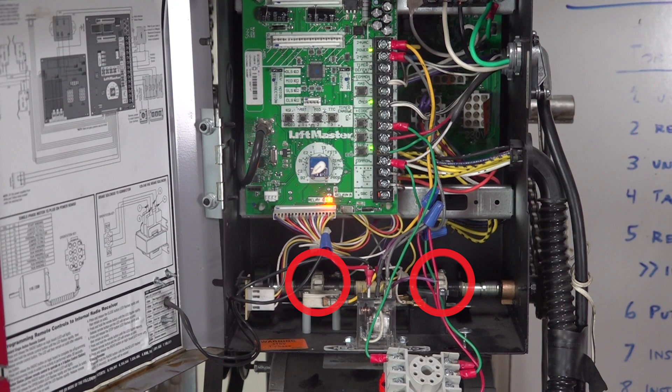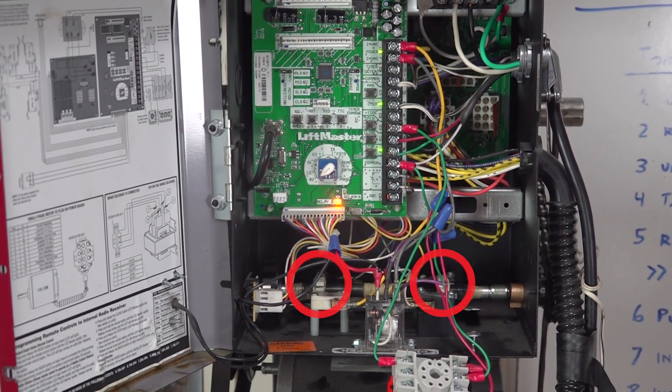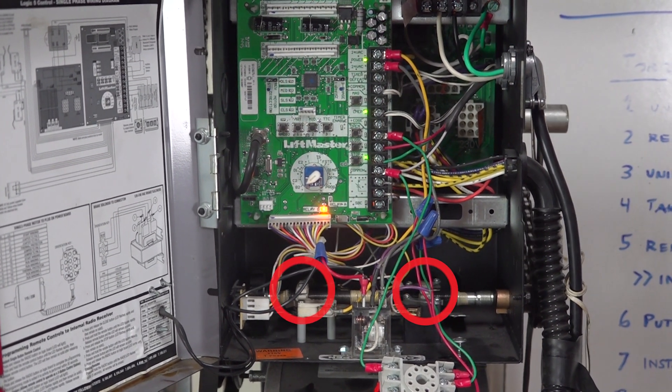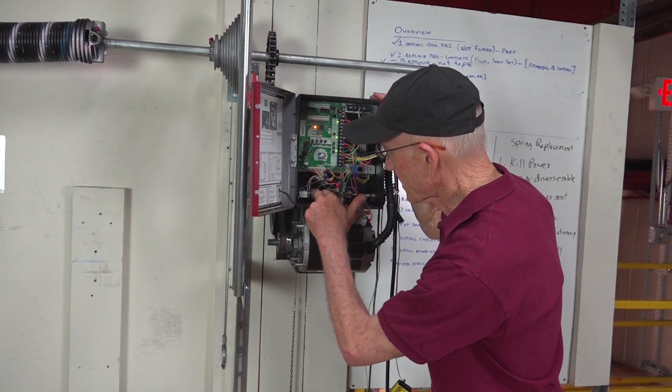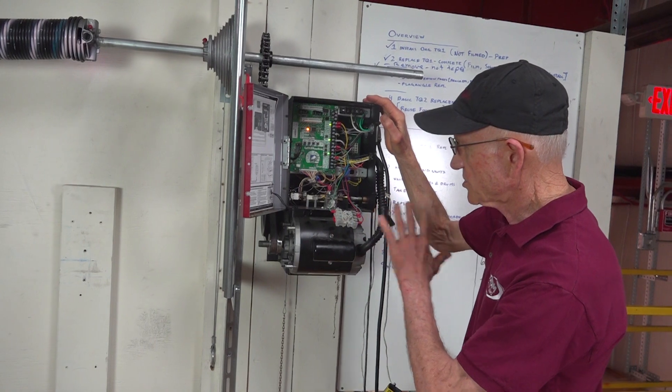There are two limit nuts that travel to the left and the right. And when this left nut gets to the switch, the little micro switch, it shuts off.